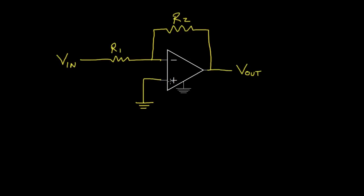In this case, the positive terminal is connected to ground, giving it a voltage of zero relative to ground. By the ideal op amp model, the negative terminal is also at zero — this is called virtual ground. Since no current flows into the op amp terminal, any current flowing in from our source, call it I, will flow entirely through the feedback resistor R2.